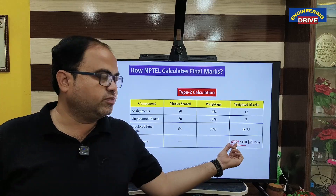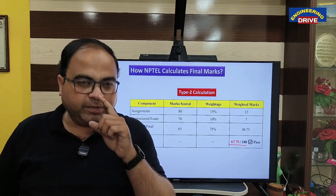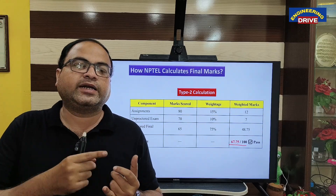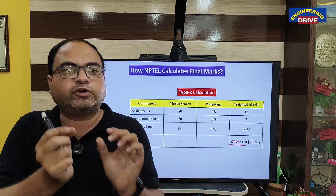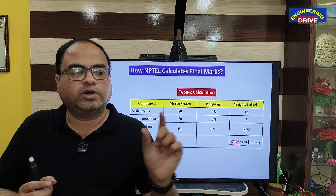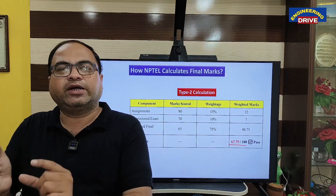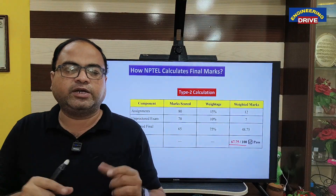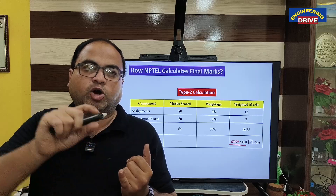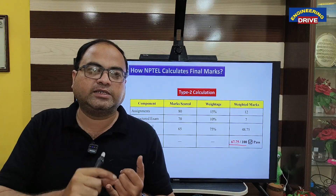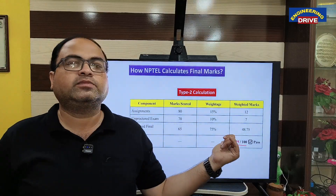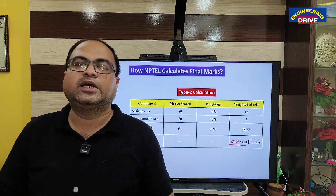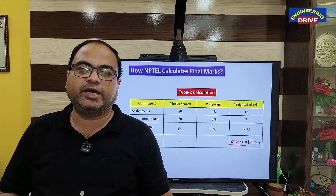These marks will be reflected in your NPTEL certificate. In the certificate, for Type 1 exams, it will clearly mention how many marks you got out of 25 for assignments and how many out of 75 for the final exam. Similarly, for Type 2 exams, the certificate will show marks out of 15 for assignments, out of 10 for the unproctored online exam, and out of 75 for the final exam. With this, let me close today's session. See you soon everybody, take care.